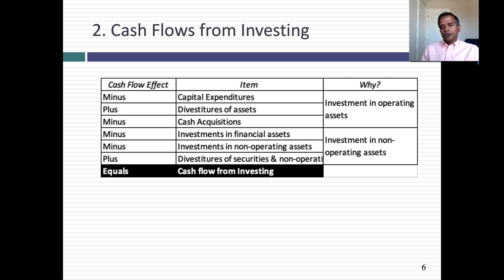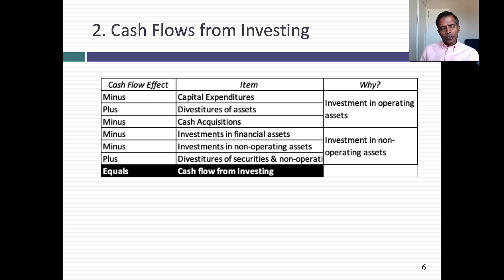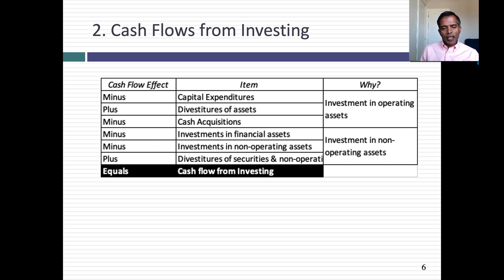Next: cash flows from investing. I'm going to break these down into two groups. The first is cash flow from investing in operating assets — if you're a manufacturing company, this would be what you spend building new factories and buying new equipment. But sometimes as you mature, you might fund new equipment by selling off old equipment. So don't be surprised to see divestitures of old assets show up as part of the investing cash flows — what you're capturing is the net investment in operating assets.